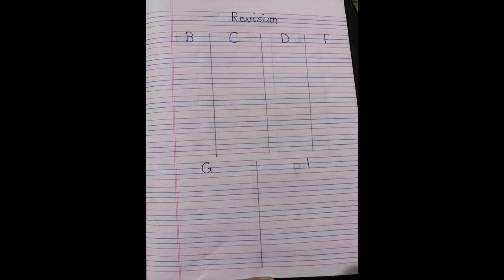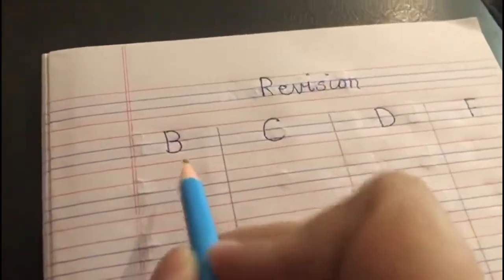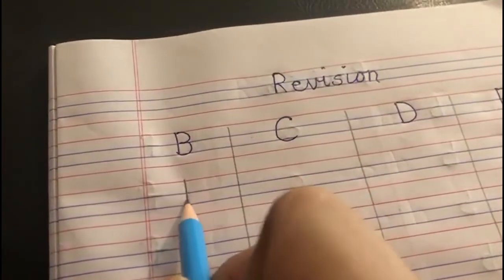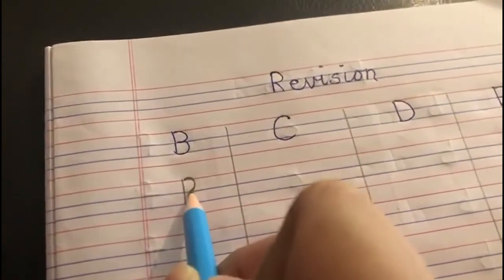Come on, let's write and revise the capital letters. We'll begin with letter B. To write capital B, make a standing line from the red line to the blue line, then make one bumper and another bumper. B says buh.